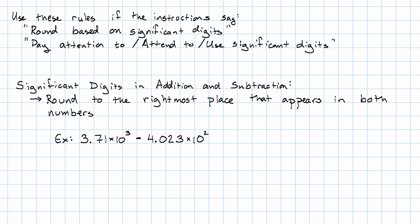Let's say we want to do this subtraction problem: 3.71×10³ minus 4.023×10². Now notice I have different magnitudes. That won't do. I need to rewrite with the same magnitude.